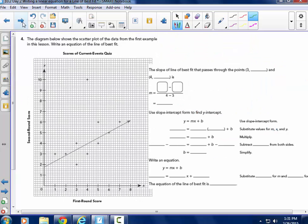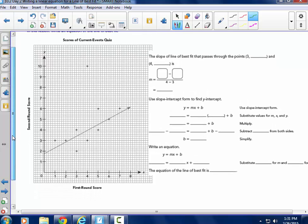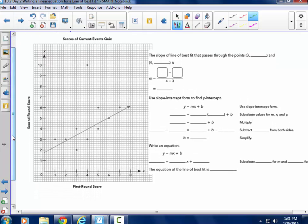Okay, here we go. Page 18. The diagram below shows the scatter plot of the data from the first example in this lesson. Write an equation to find the line of best fit. So we're going to follow those steps that we had in the example just prior to this. This one is in your notes on page 18. The slope of the line of best fit passes through the points 3, 3.4 for the Y value there, this point here.